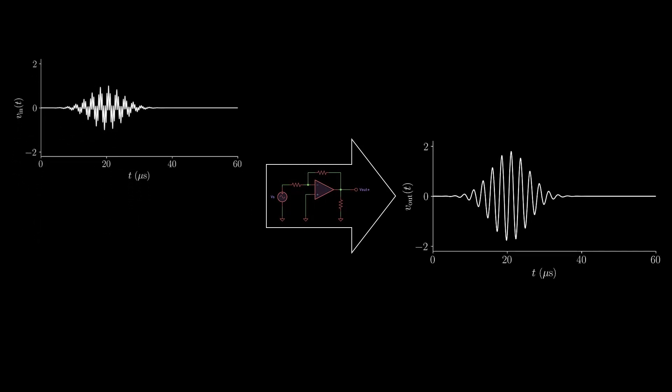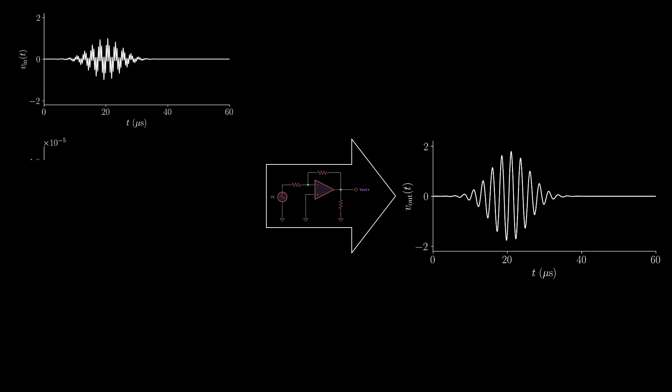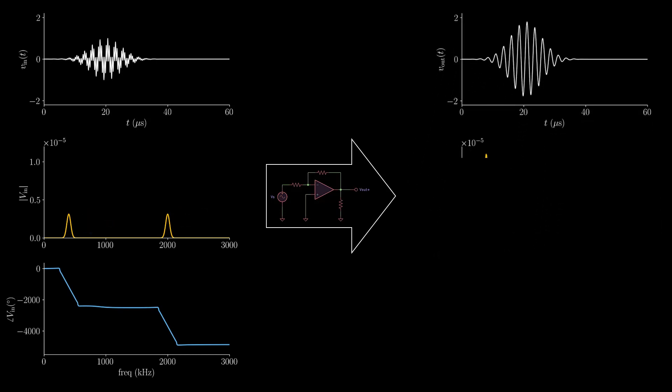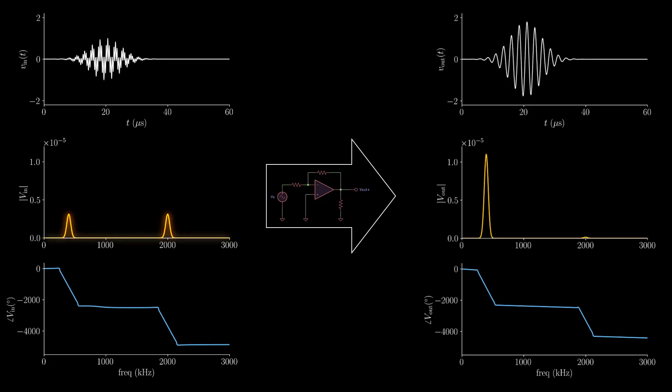The frequency content of the input signal can be analyzed by plotting the magnitude and phase of its Fourier transform. This input signal has peaks at 400 kHz and 2 MHz. The output signal shares the 400 kHz peak, but the 2 MHz peak has diminished. This is a typical use of the Fourier transform, to compare the frequency content of signals.